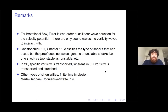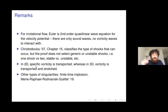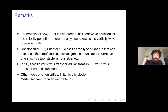In 2D, specific vorticity is transported. In 3D, vorticity is transported and stretched — one of the big differences between 2D and 3D. There are also other types of singularities: Merle, Raphael, Rodiansky, and Sefto proved the first result in terms of smooth initial data leading to an implosion — a completely different type of singularity. In the implosion, density and velocity go to infinity, whereas in a shock they stay bounded — only the gradients go to infinity.